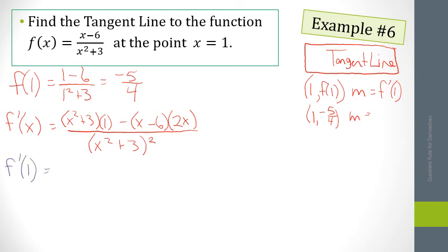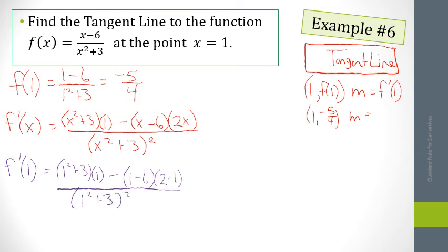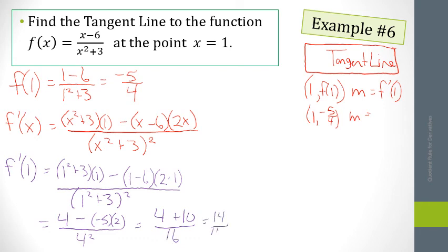Evaluating f′(1): (1² + 3) times 1, minus (1 - 6) times (2 times 1), all over (1² + 3) squared. That becomes 4 times 1, minus negative 5 times 2, all over 4 squared — so 4 + 10 over 16, which is 14/16. Simplifying by dividing by 2 gives 7/8. So our slope is 7/8.